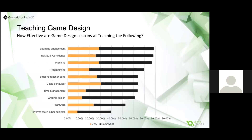We sent out a questionnaire to our teachers at the start of November 2020. The responses are consistent with when we asked the same questions back in 2019, with planning, individual confidence, and learning engagement all scoring more than 75% when rated as somewhat effective or better. When we asked how effective our game design lessons are at teaching various skills, you can see the positive results on the slide — and a good one there is the student-teacher bond, which is up over 65%, which is great.